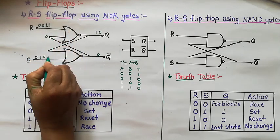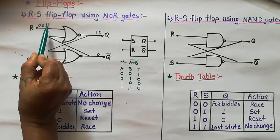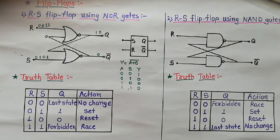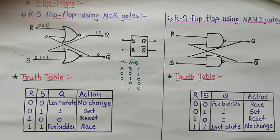If R=1 and S=1, then the upper NOR gate has one input high, so its output is low. And the lower NOR gate also has one input high, so its output is also 0. That is Q and Q bar are both equal to 0. This is an undesirable condition — it is called the forbidden condition or race condition. This is the truth table of RS flip-flop by using NOR gate. This race condition is undesirable and it is never used.